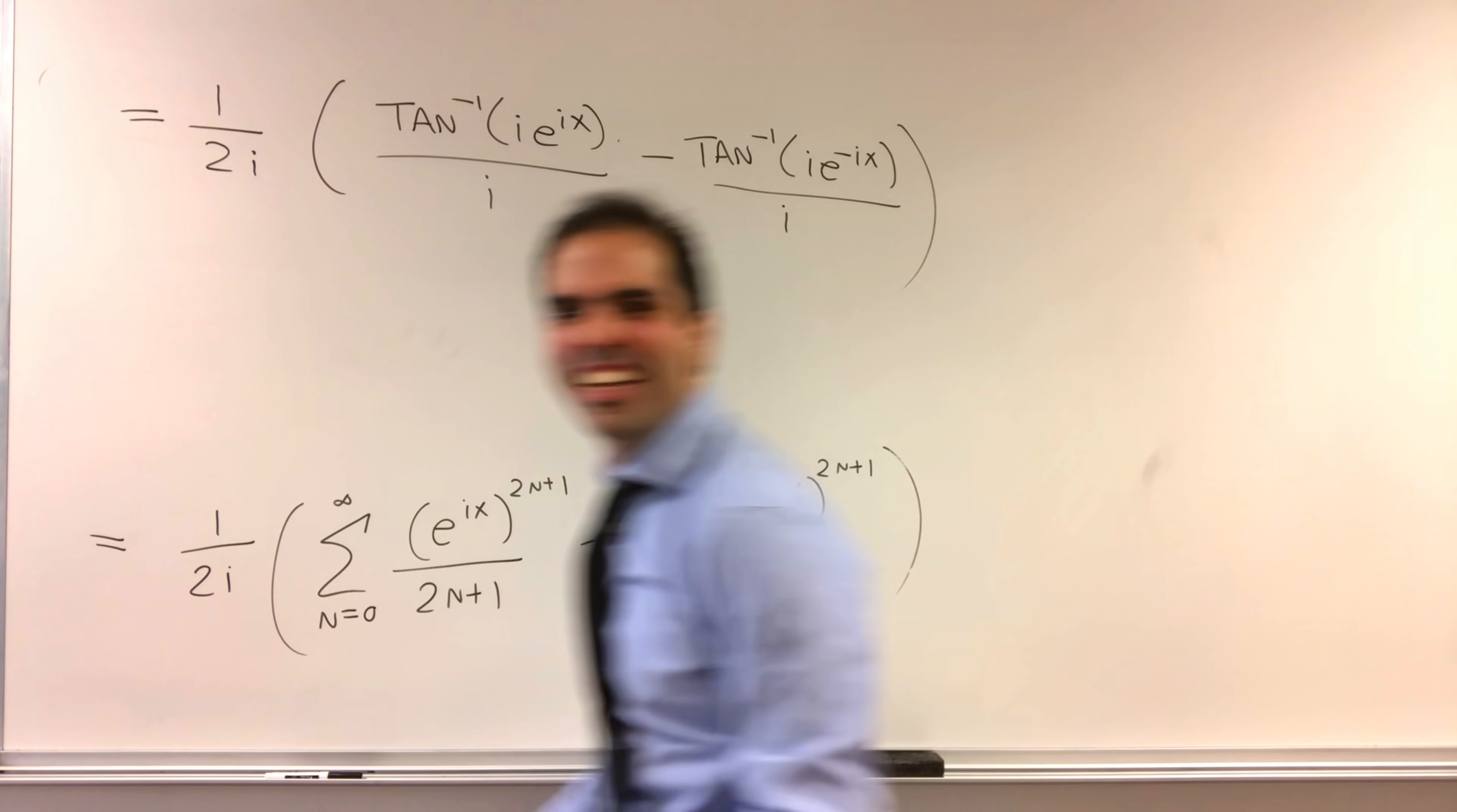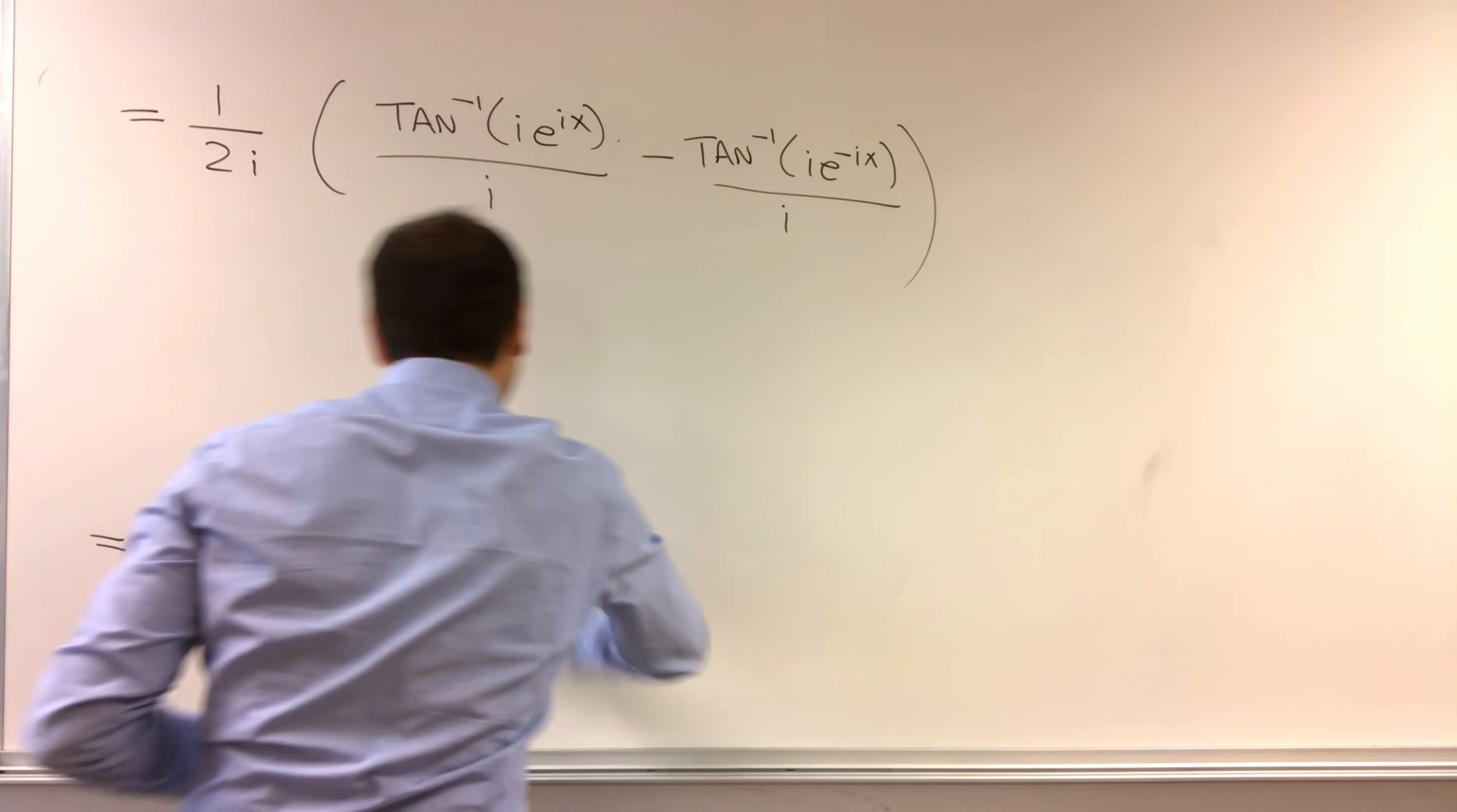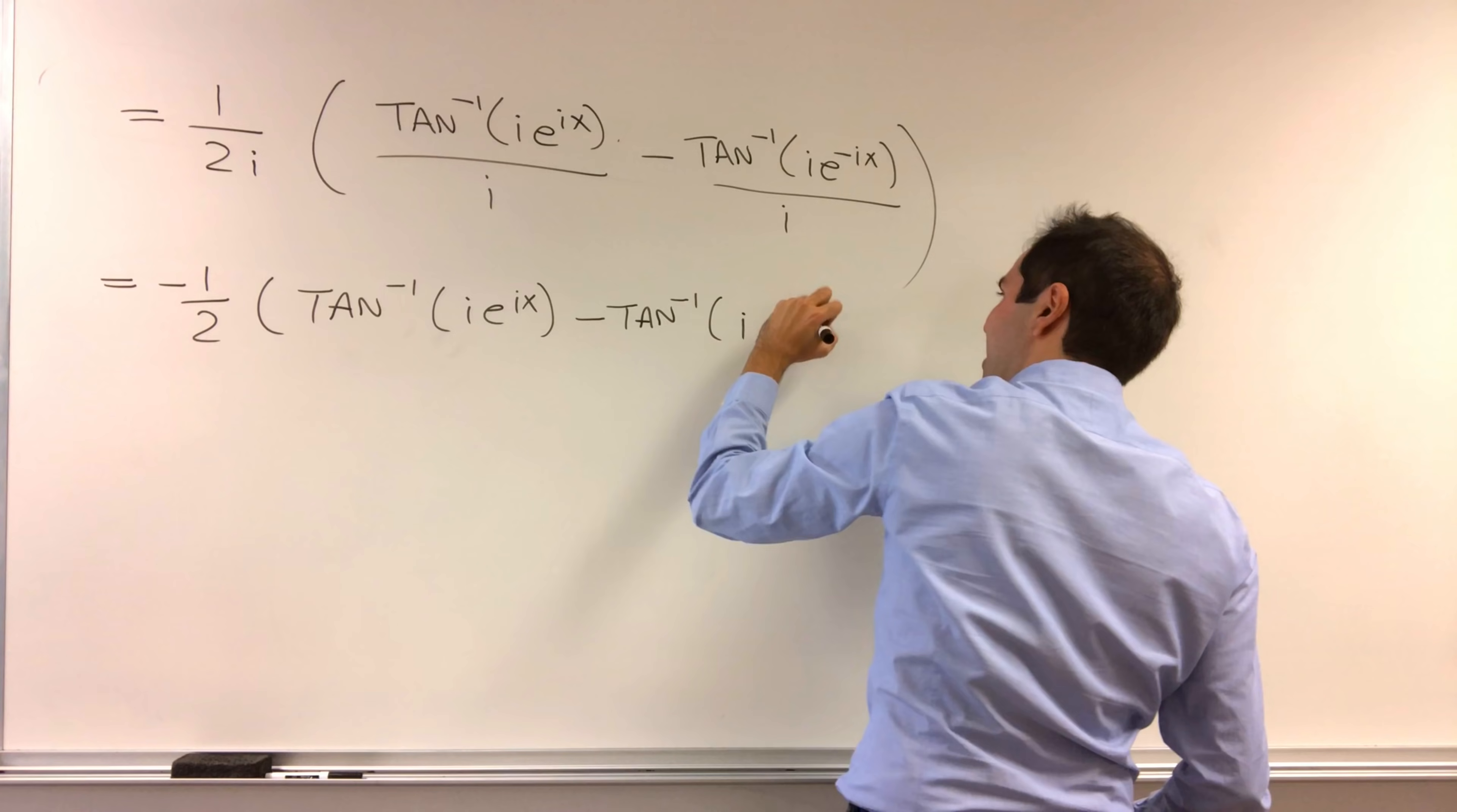No more pomegranates, like that other video. Okay, and now, again, as promised, we do have this simplification where i times 2i becomes minus 1 half. So, in the end, we get the following. Minus 1 half arctangent of i e to the ix minus arctangent of i e to the minus ix.